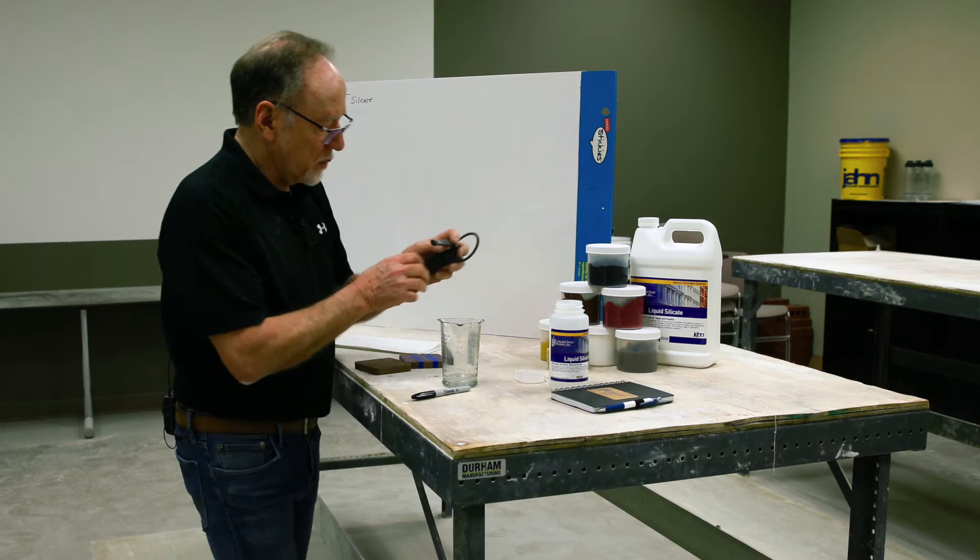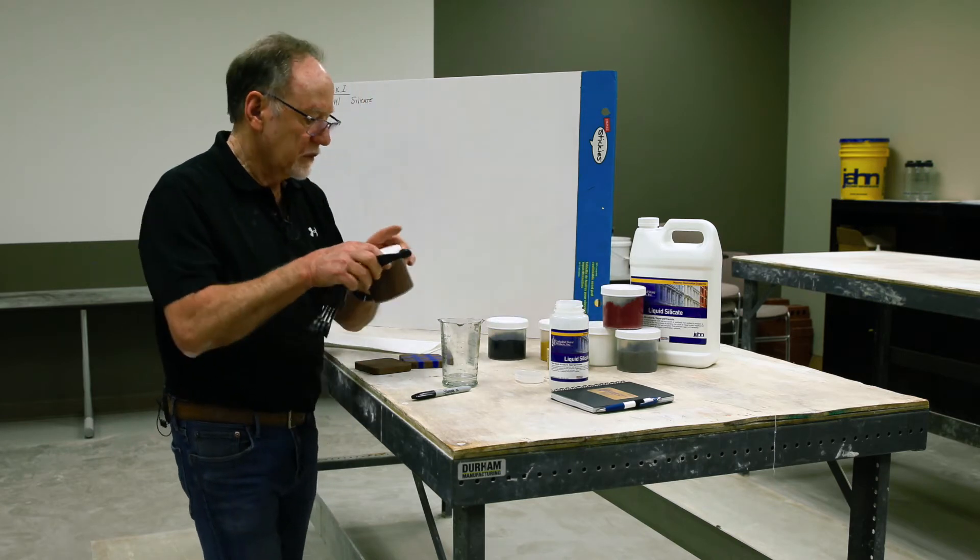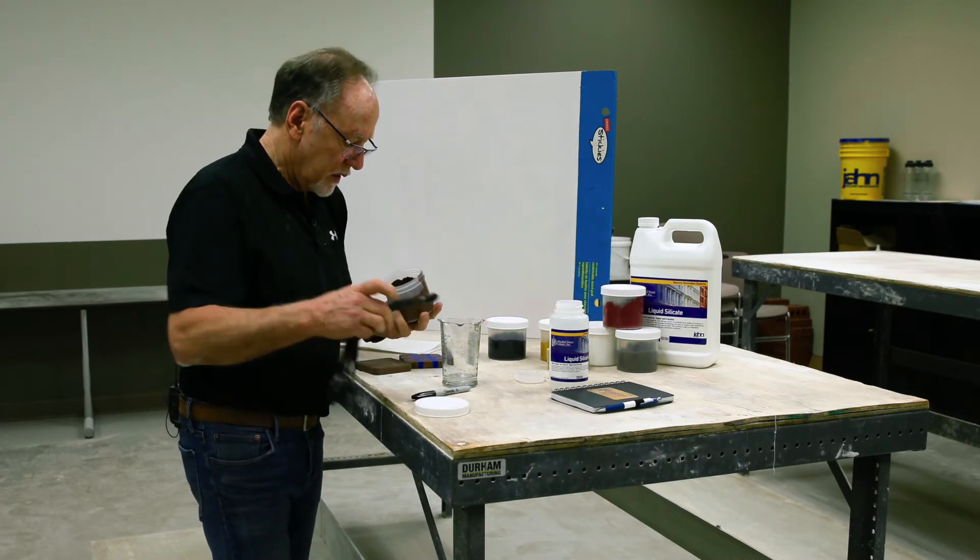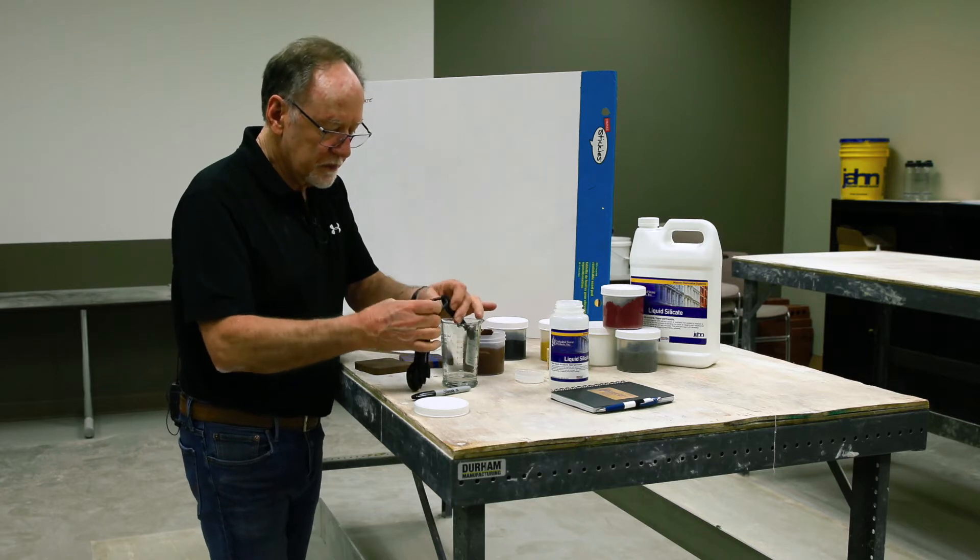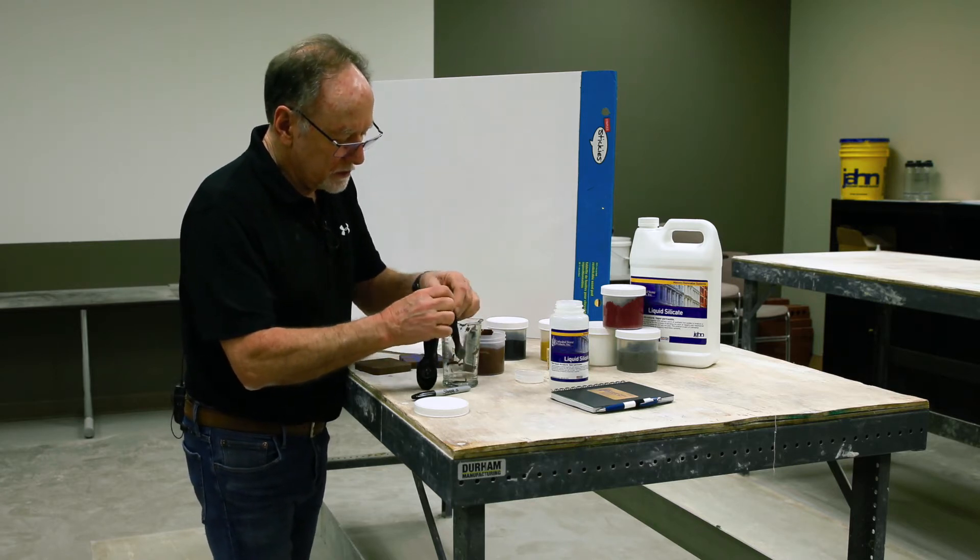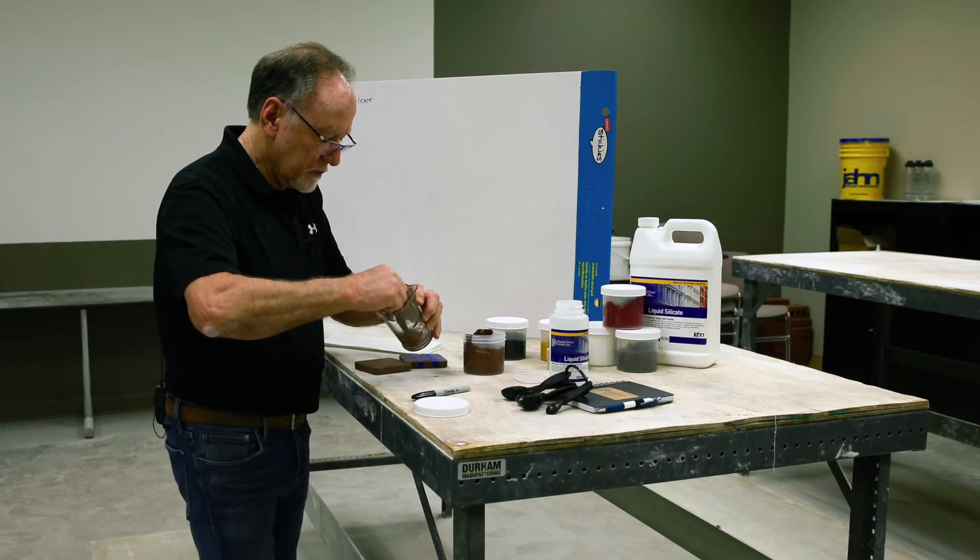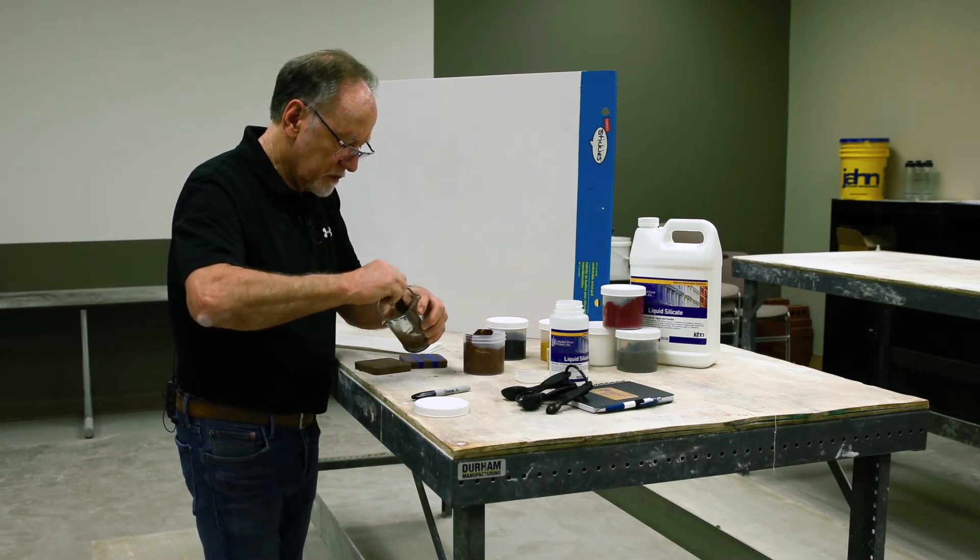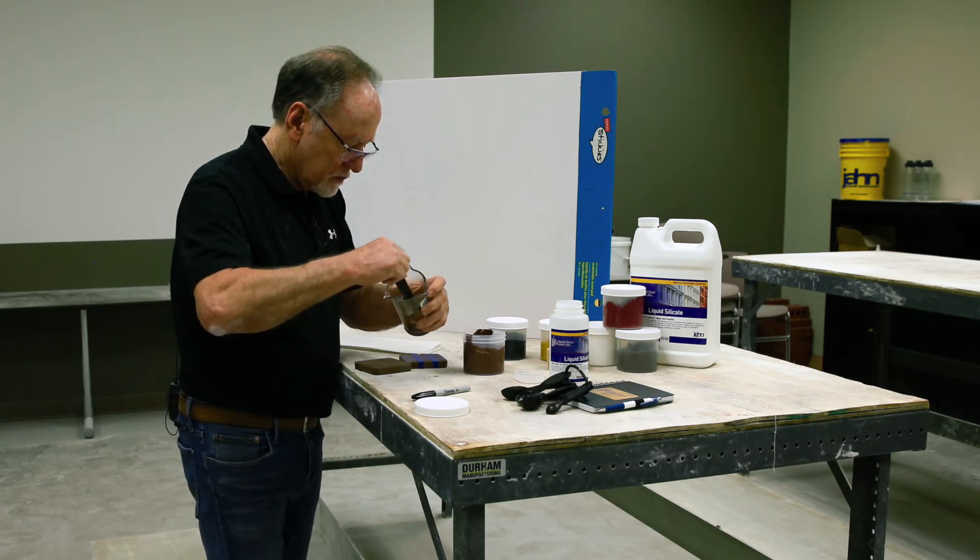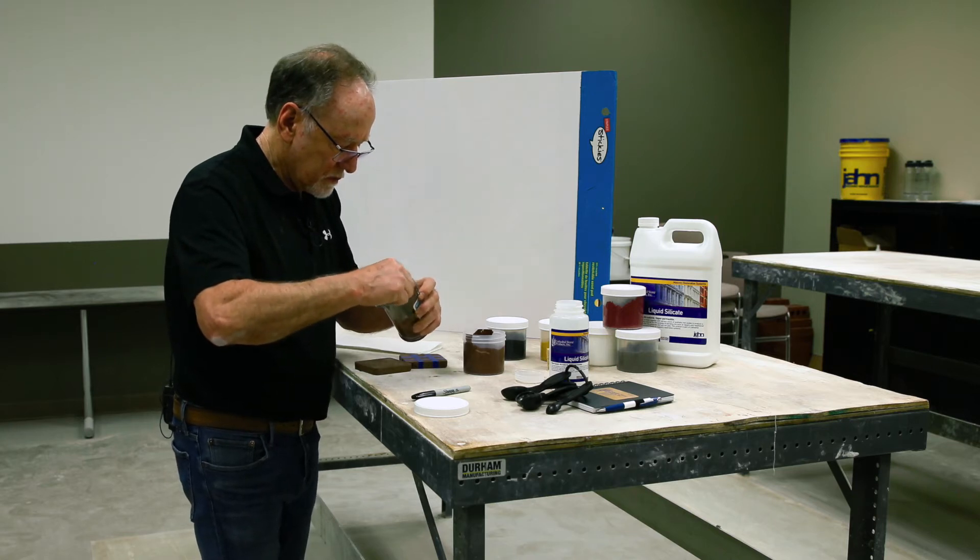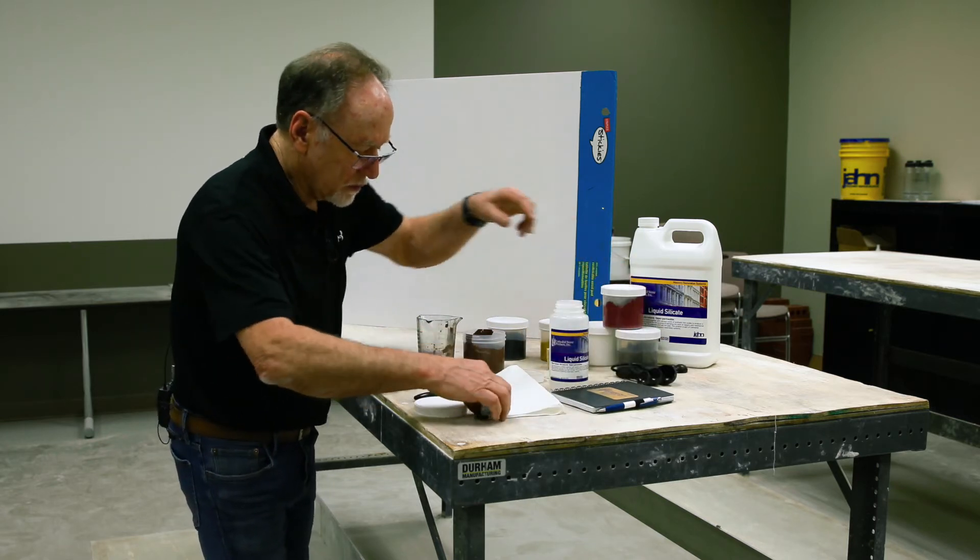And I always start off with a small amount, a quarter teaspoon typically. Take the brown, add it to the silicate, stir it up. I'm going to take this off, make it a little easier. That's going to be stain number one.